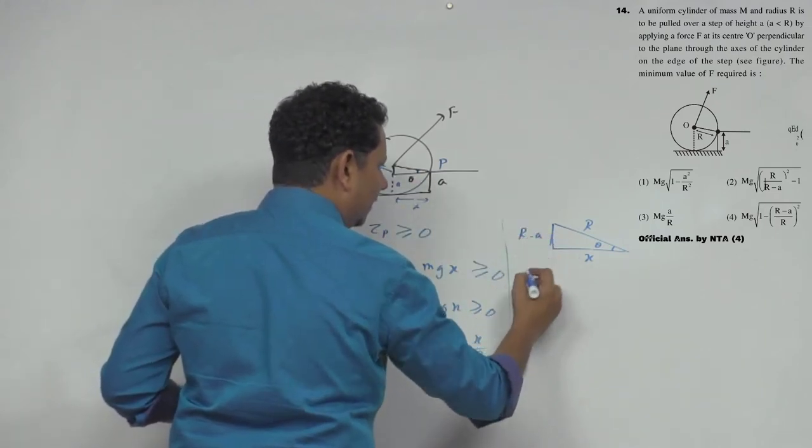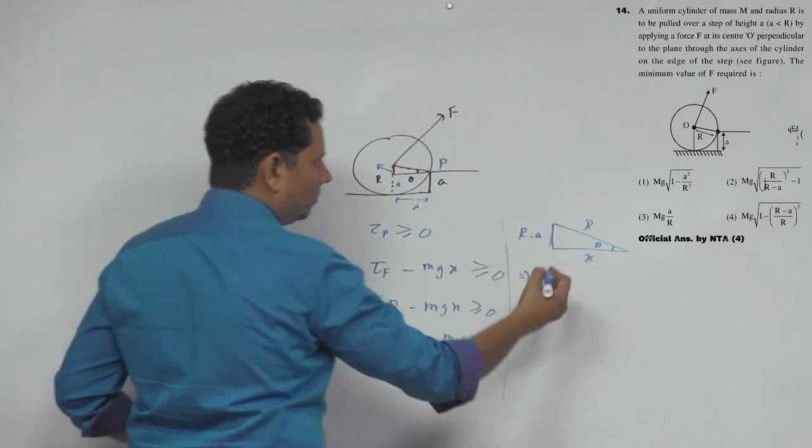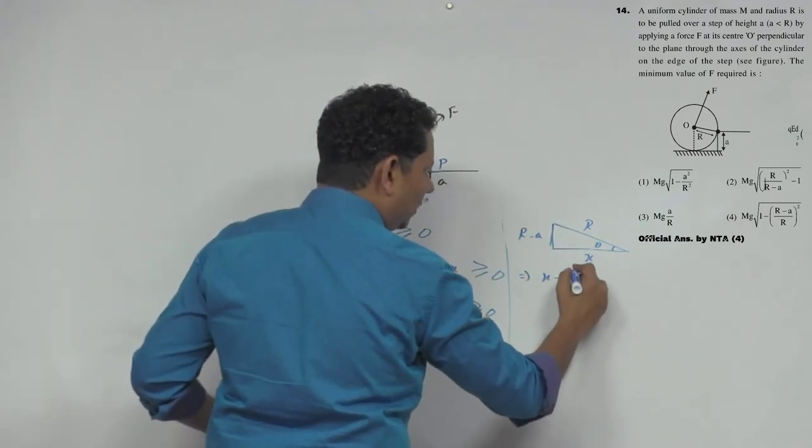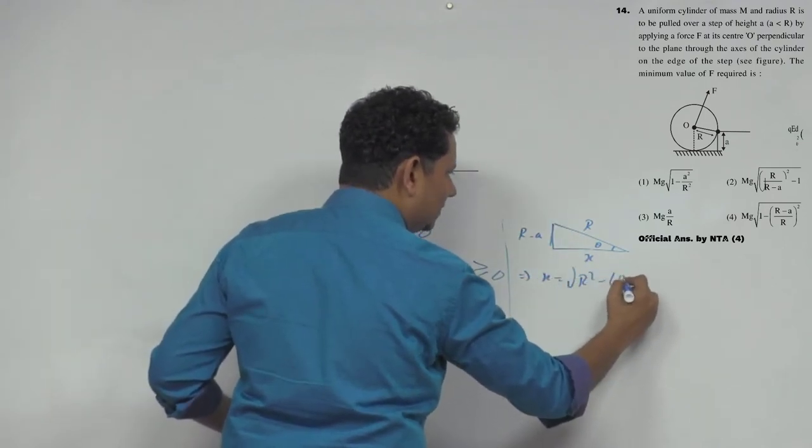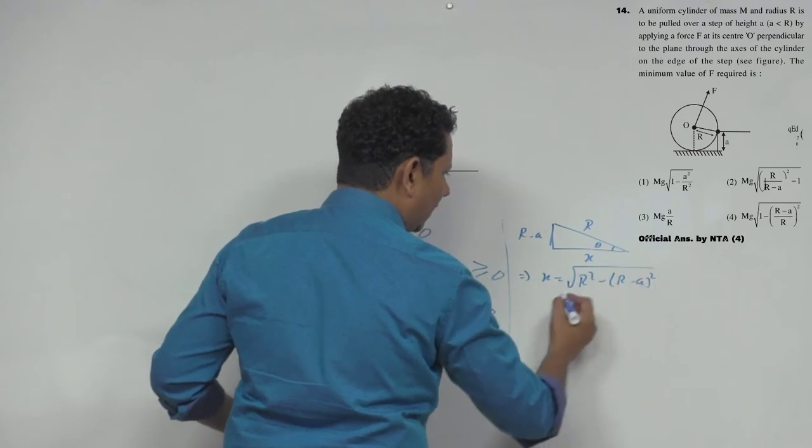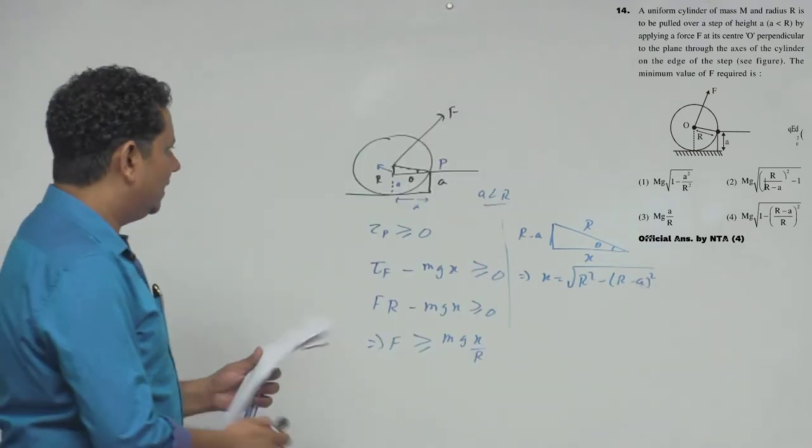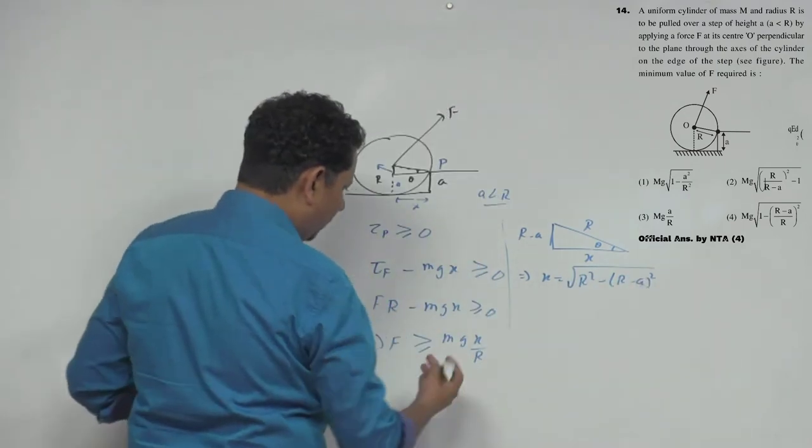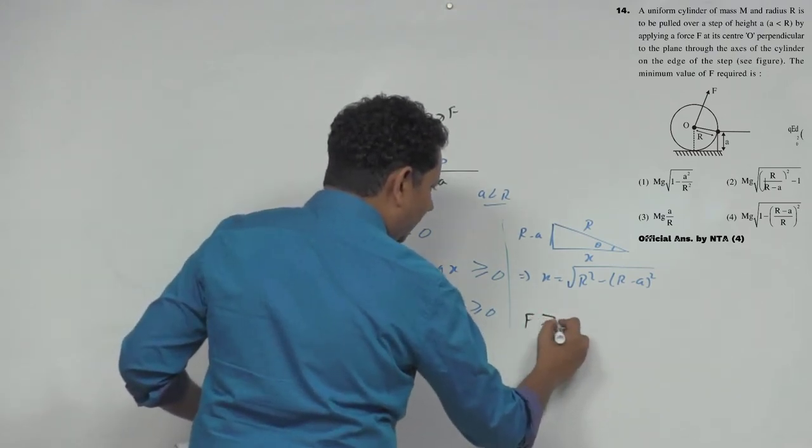So this side will be r minus a. Which implies if we apply Pythagoras theorem, the value of x will be equal to under root of r square minus (r minus a) square. Now we will fit this value of x here.